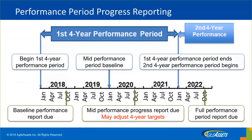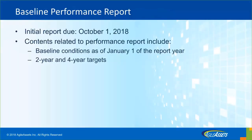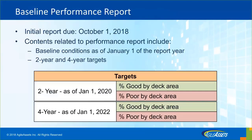If they haven't achieved those targets in the midterm, they have a chance to adjust the goal for four-year targets. For example, in the initial report due in October 2018, the contents are the baseline condition as of January 1st, 2018, followed by the target for two years and the target for four years. The targets are based on the percentage of good bridges and percentage of poor bridges in the network for NHS — National Highway System — bridges.